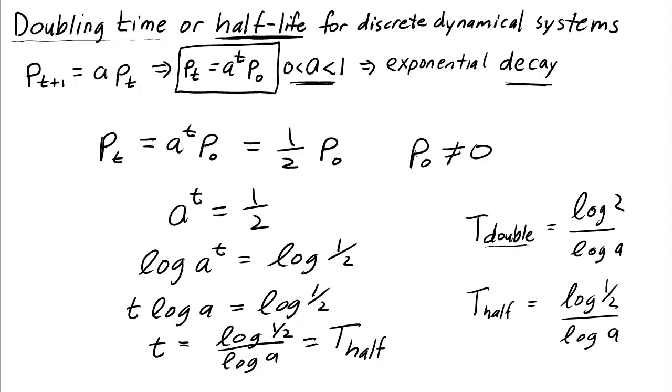The formulas for the doubling time and the half-life are nearly identical. The only difference is for the doubling time we take the log of 2, while for the half-life we take the log of one half. The doubling time is used for exponential growth when a is larger than 1, and the half-life is used for exponential decay when a is between 0 and 1. If you screw up and use the wrong formula, you'll just get a negative sign, which will tell you to use the other one.